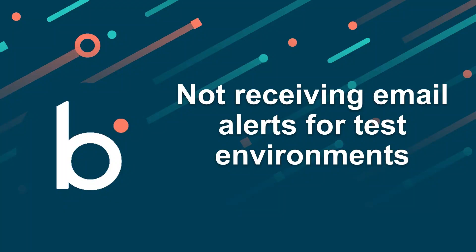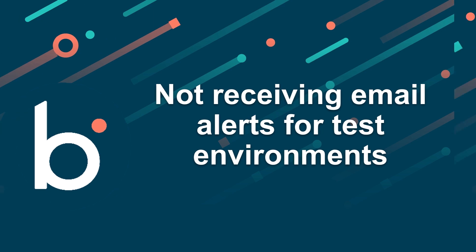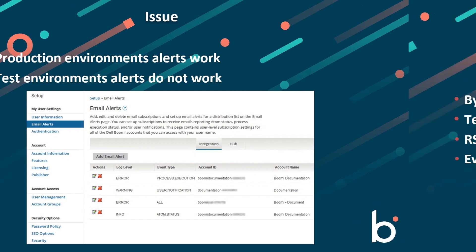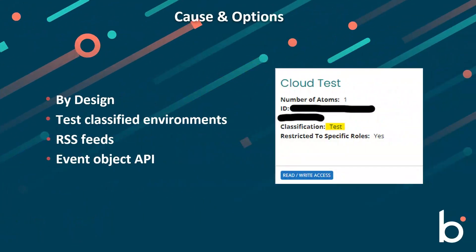In this video I will go over the reasons you are not receiving any alerts for your executions within your test environment. If you're testing your alerts within your account for different processes in different environments, you have noticed that within your production environments you receive the email alerts as expected, but upon testing these same processes within the test environment you do not receive any email alerts.